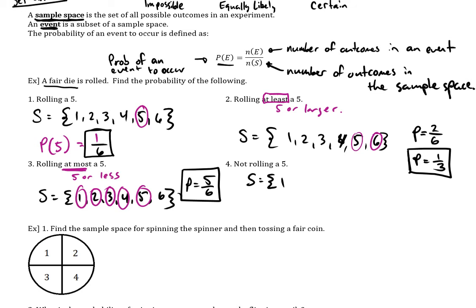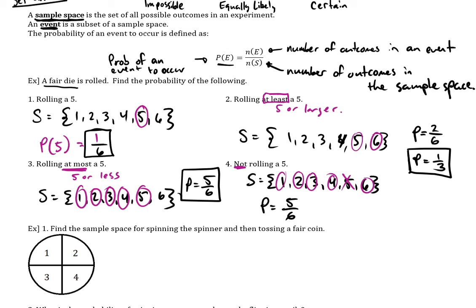Not rolling a five — I'm going to draw the sample space again. It might seem easy without it, but visually seeing everything means you're very unlikely to make a mistake. 'Not' is the key word here, so I don't want five, but I want all the others: one, two, three, four, and six. That's five numbers circled out of six total outcomes — so five out of six.